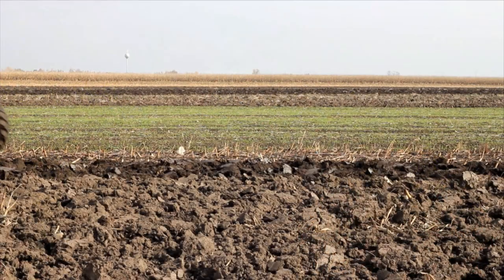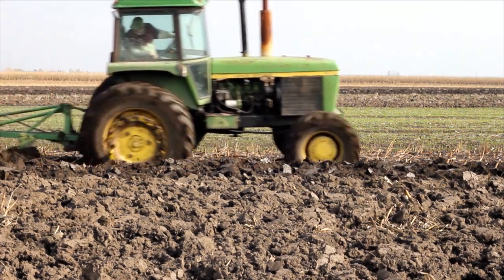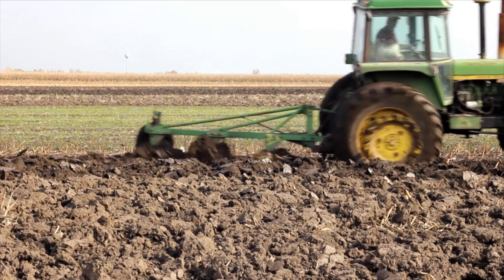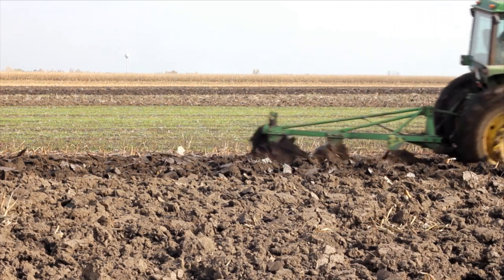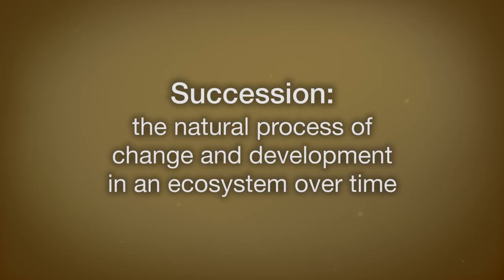The first thing that agriculture does — all agriculture does — is create an annual disturbance. You come in and plow the field and turn over the soil, halting succession. Naturally, plants go through a progression from smaller to larger, from annuals to perennials, and from grasses to woody species to trees. Agriculture halts that succession of plants.